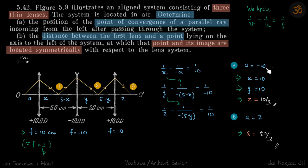Now second part, distance between the first lens, point and the image are located symmetrically. So a is equal to z. So this time I am not solving it you can do that and you will get the value of a to be 50 by 3 which will be our answer.